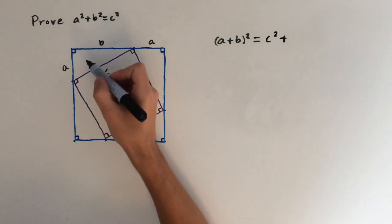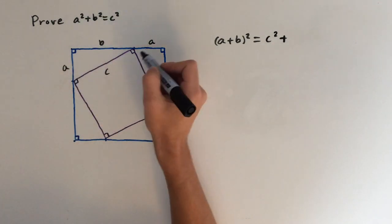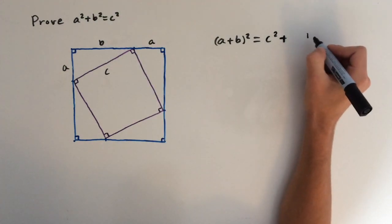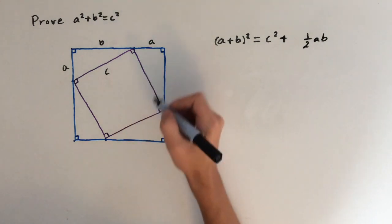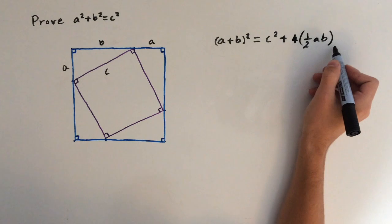now if we look at the area of one triangle, the formula is a half times the base times the height. Now the base is A and the height is B. So this is going to give us a half AB. And we've got four of these triangles, so this is going to equal four times a half AB.